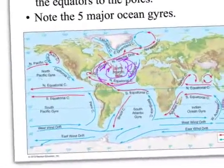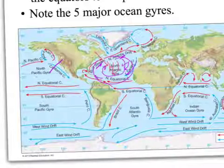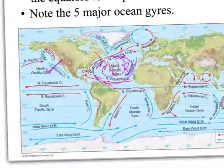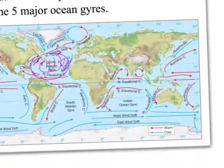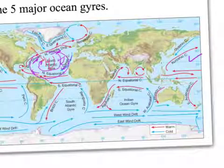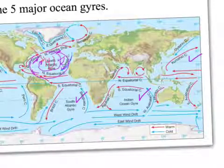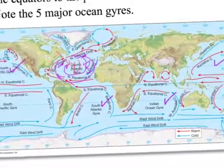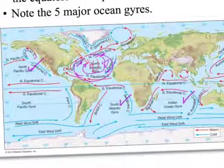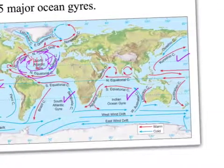That's one ocean gyre. Counting our five ocean gyres: in the Northern Hemisphere we have the North Atlantic and the North Pacific gyres. In the Southern Hemisphere, we have three: the Indian Ocean Gyre, the South Atlantic Gyre, and the South Pacific Ocean Gyre.